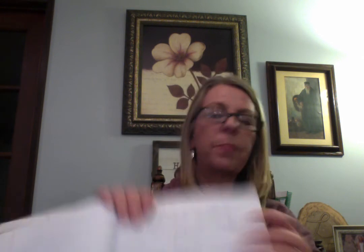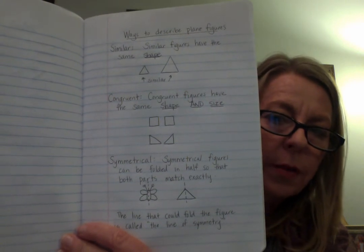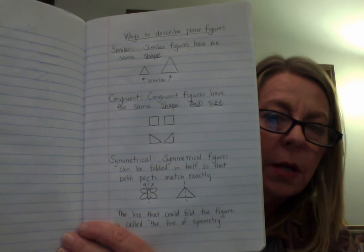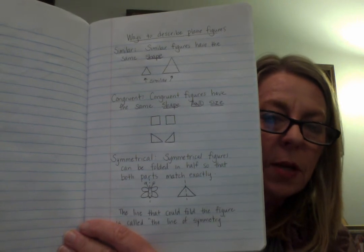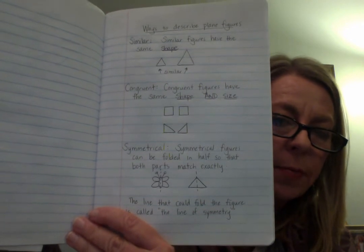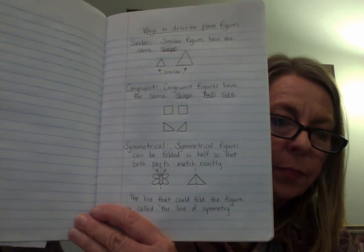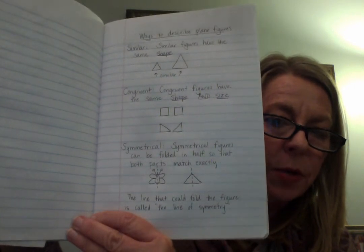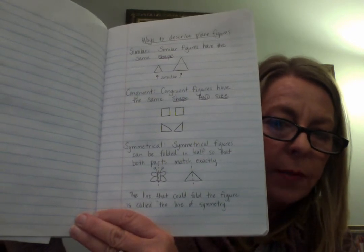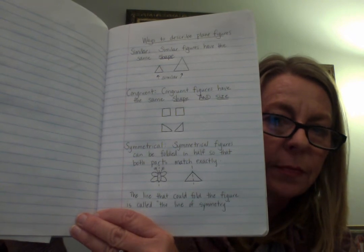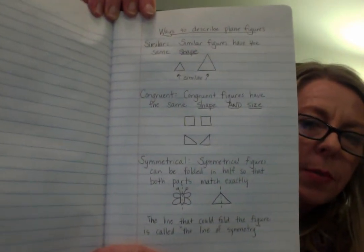I'm going to put my journal back up so you can finish writing. Symmetrical figures can be folded in half so that both parts match exactly. You can draw two figures with a dotted line to represent the fold, showing each part is equal to the other. The line that could fold the figures in half is called the line of symmetry. I'm going to hold this up close — pause and catch up if you need to.